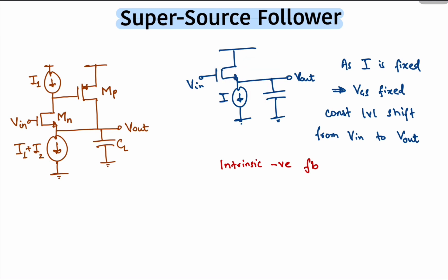The source follower is a simple solution. However, there's one problem. We are relying on the fact that the bias current of the transistor is fixed. Now suppose the output sinks some current I load. Then the bias of the NMOS becomes I minus I load, and thus Vn minus Vout, which is the Vgs of the NMOS, also changes.